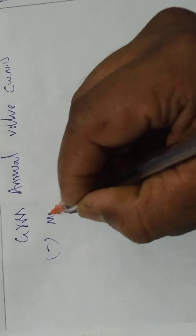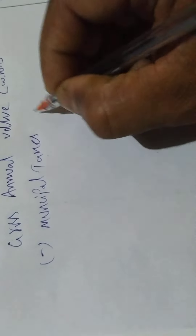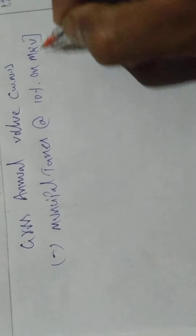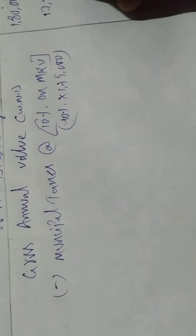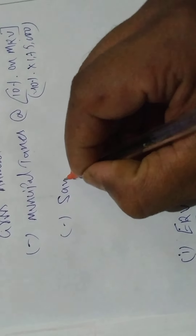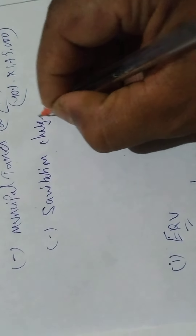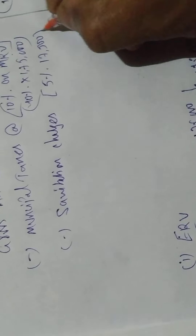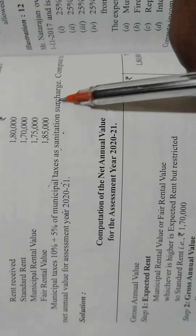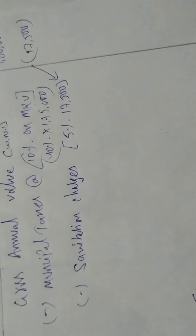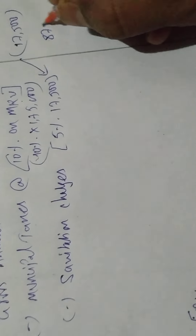From GAV 1,80,000, deduct municipal taxes at 10% on MRV. MRV is 1,75,000, so 10% = 17,500. Also deduct sanitation charges at 5% of municipal taxes: 17,500 × 5% = 875.